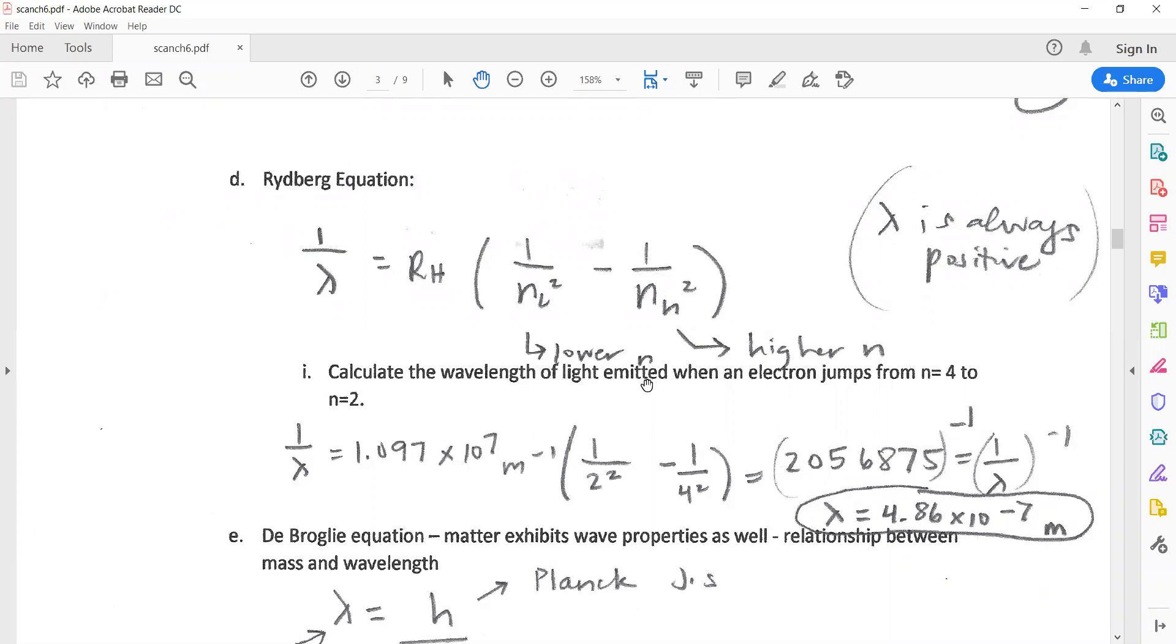Calculate the wavelength of light emitted when an electron jumps from n equals 4 to n equals 2. We have 1 over lambda, Rydberg's constant, 1 over the lower n squared minus 1 over the higher n squared. At first we're going to get this huge number, but that's equal to 1 over lambda, which means that's the inverse of the wavelength. To get to actual wavelength we have to raise it to the negative 1 power or do 1 divided by that number. So our lambda ends up being 4.86 times 10 to the negative 7th meters.